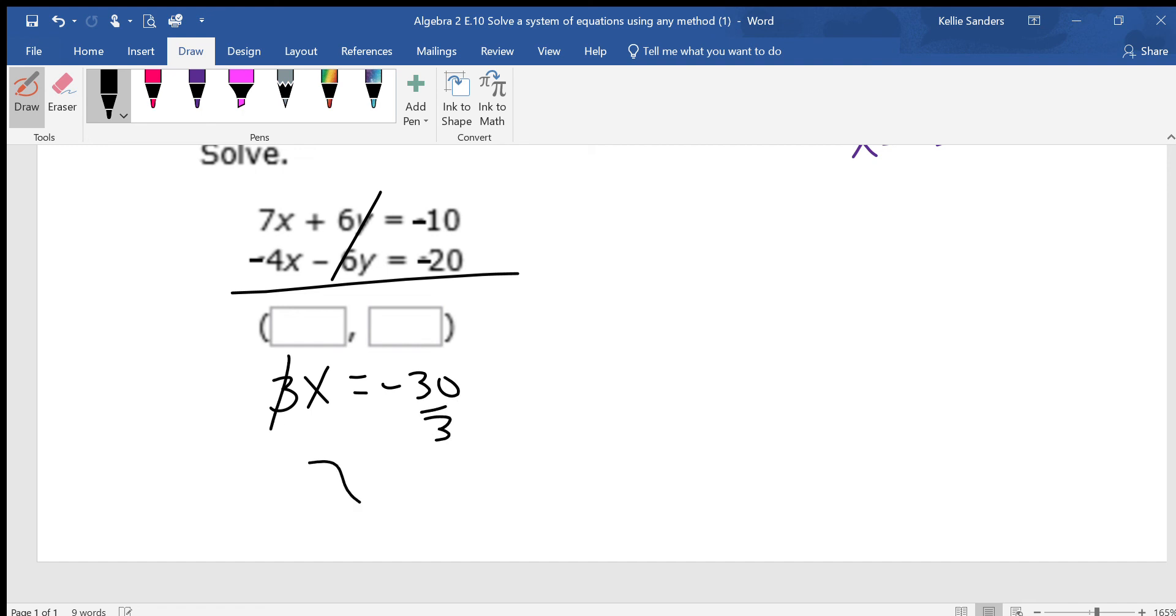Divide by 3. And x equals negative 10. If they were all that easy, right? Then, make sure you either put negative 10 in for this x or in for this x. Let's do the top.